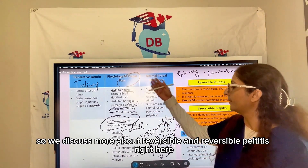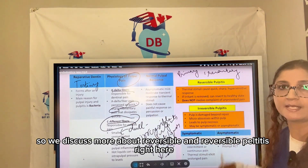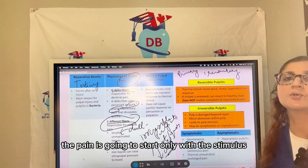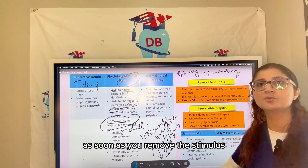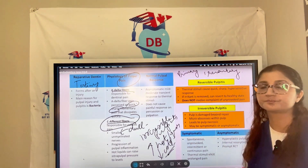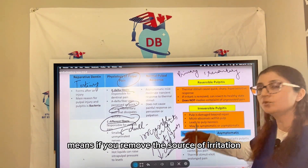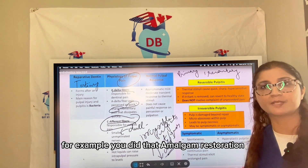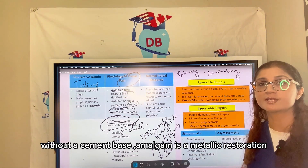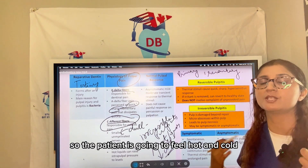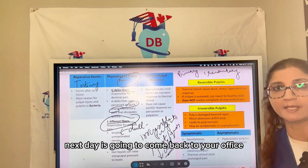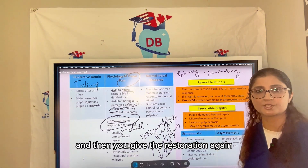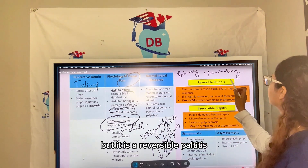In reversible pulpitis, the pain starts only with the stimulus and disappears as soon as the stimulus is removed. It means if you remove the source of irritation, the pulp can become normal again. For example, if you placed an amalgam restoration without a cement base, the patient feels sensitivity. You remove the restoration, put a permanent cement base, and restore again — the pulp recovers, so it is reversible pulpitis.